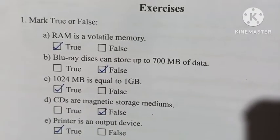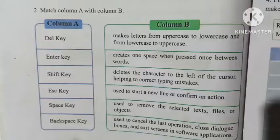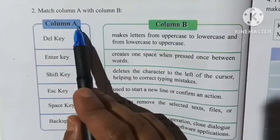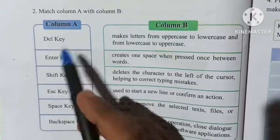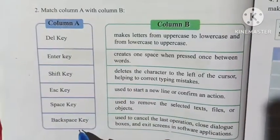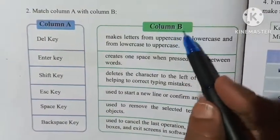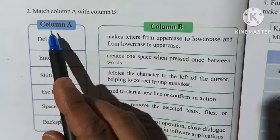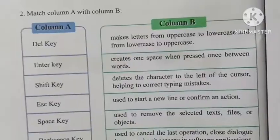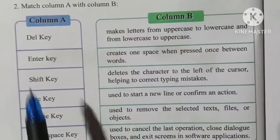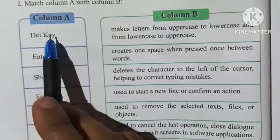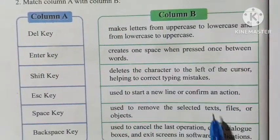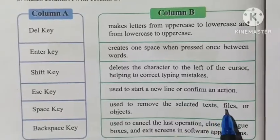Our next question is to match Column A with Column B. In Column A, names of keys are given, and in Column B their functions are written. The first one is the Del key, which means Delete key — it is used to remove selected text, files, or objects.